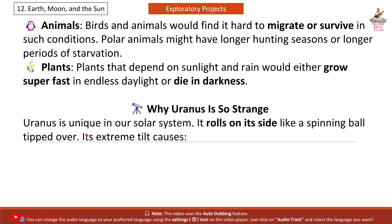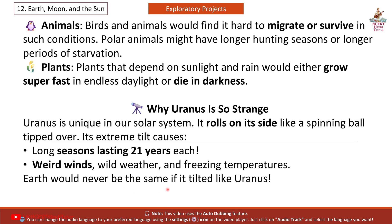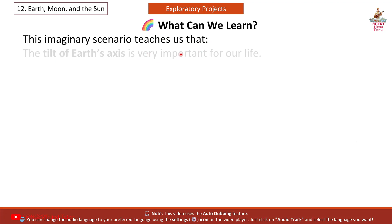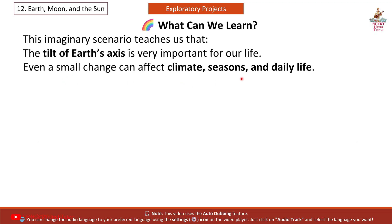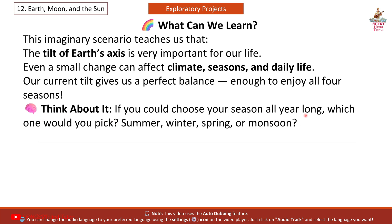Why is Uranus so strange? Uranus is unique in our solar system — it rolls on its side like a spinning ball tipped over. Its extreme tilt causes long seasons lasting 21 years each, weird winds, wild weather, and freezing temperatures. Earth would never be the same if it tilted like Uranus. What can we learn? This imaginary scenario teaches us that the tilt of Earth's axis is very important for our life. Even a small change can affect climate, seasons, and daily life. Our current tilt gives us a perfect balance — enough to enjoy all four seasons. If you could choose your season all year long, which one would you pick: summer, winter, spring, or monsoon?